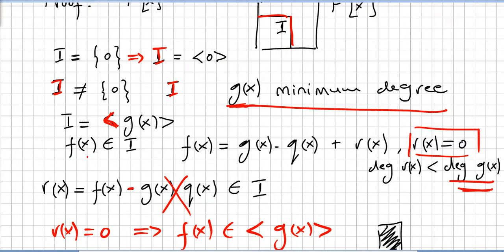To prove that, it is really simple. We pick f(x) in the ideal, and by the division algorithm we can write f(x) = g(x)·q(x) + r(x), where g(x) is the minimum degree polynomial. According to the division algorithm, either the remainder r(x) is 0, or if it is not 0, the degree of r(x) has to be less than the degree of g(x).